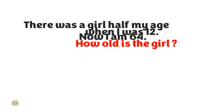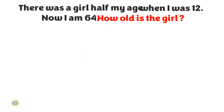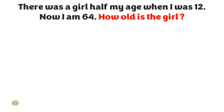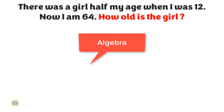Let me explain the solution now. The correct approach to solve these kind of problems is through algebra. The problem is a type of math puzzle that involves using algebraic equations to solve a real world problem. In this case, the problem involves determining the age of a girl based on information about the age of the person who is trying to determine her age.